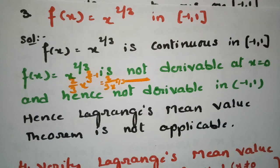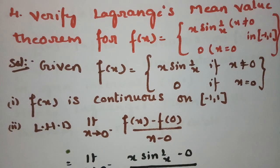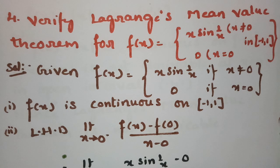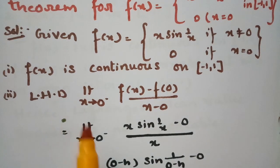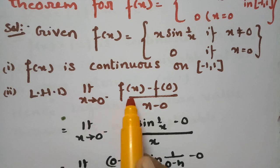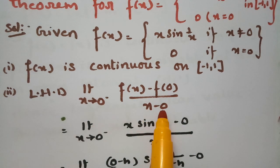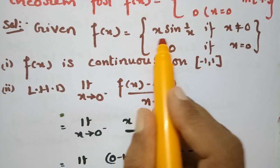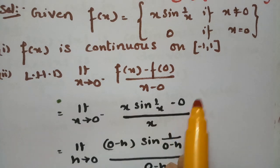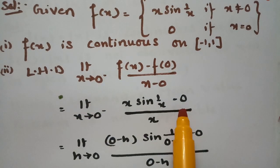The fourth problem: verify Lagrange's mean value theorem for f(x) = x·sin(1/x) when x ≠ 0, and f(0) = 0, in the closed interval [-1, 1]. f(x) is continuous on [-1, 1]. For the left-hand derivative, we compute the limit as x → 0⁻ of [f(x) - f(0)] / [x - 0]. Since f(x) = x·sin(1/x) and f(0) = 0, this simplifies to x·sin(1/x) / x = sin(1/x).